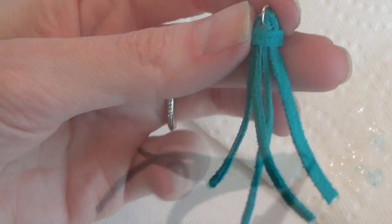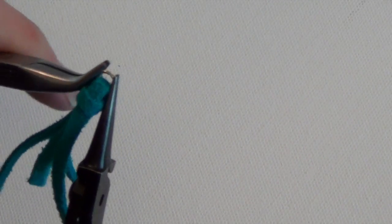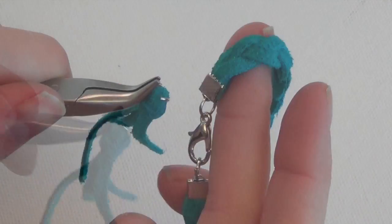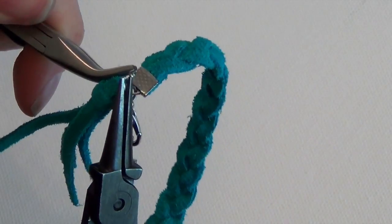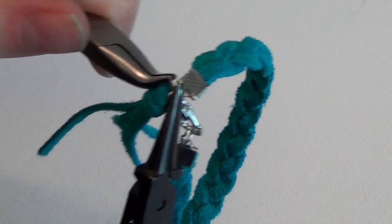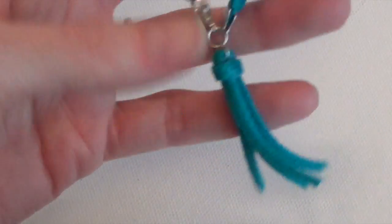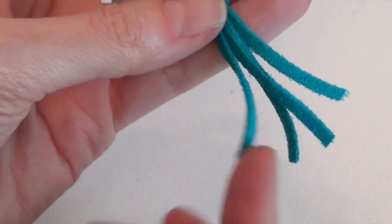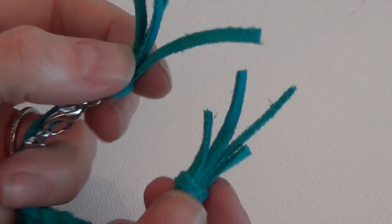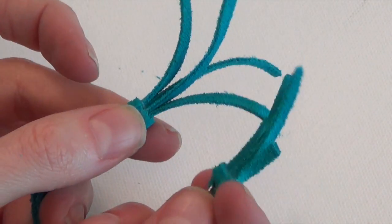Now we just need to attach the tassel to the bracelet, open up the jump ring, hook it onto the ring. I like to attach it to the ring that holds the clasp so that it doesn't get in the way when you're trying to open and close the bracelet. And with this tassel you can trim it however you want. You might prefer it one way or the other. But that's it.